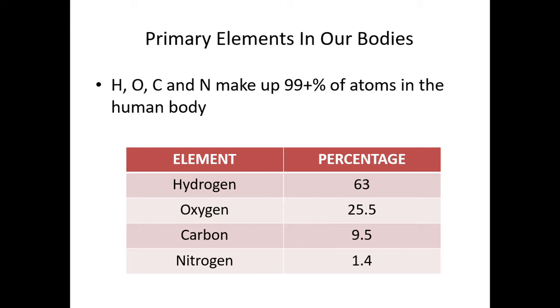Primary elements in our bodies. About 99% of the atoms in the body are composed of hydrogen, oxygen, carbon, and nitrogen. We do have some sulfur as well. As you see, we're given the percentages: 63% hydrogen, 25.5% oxygen.